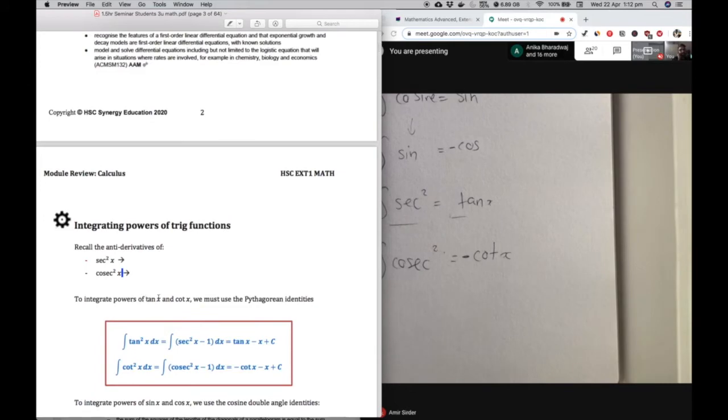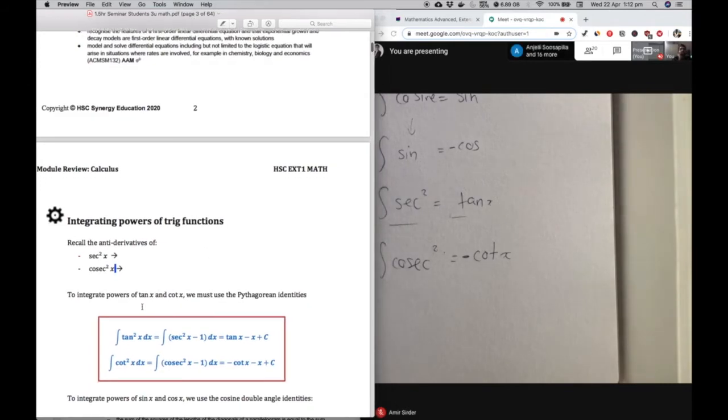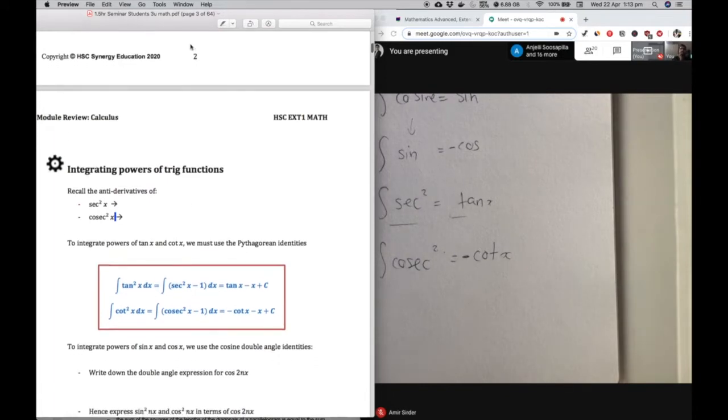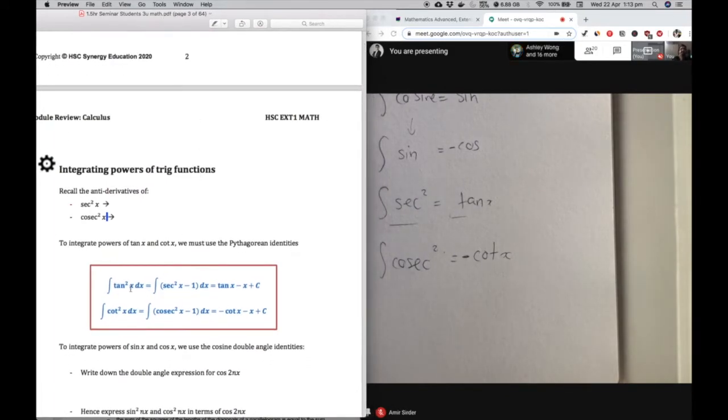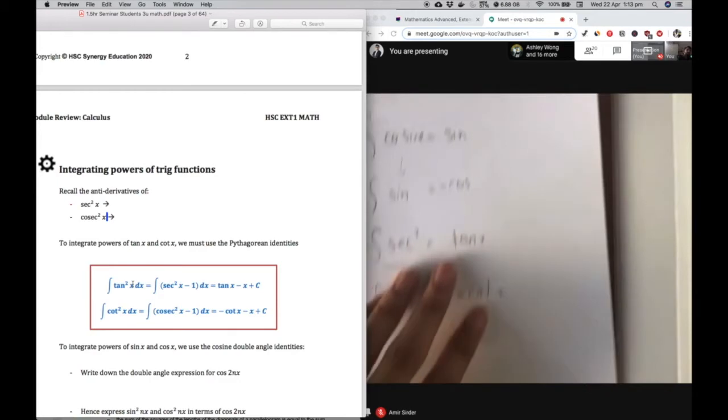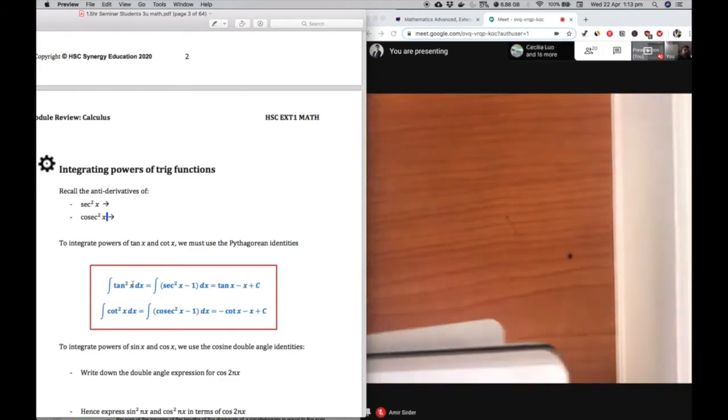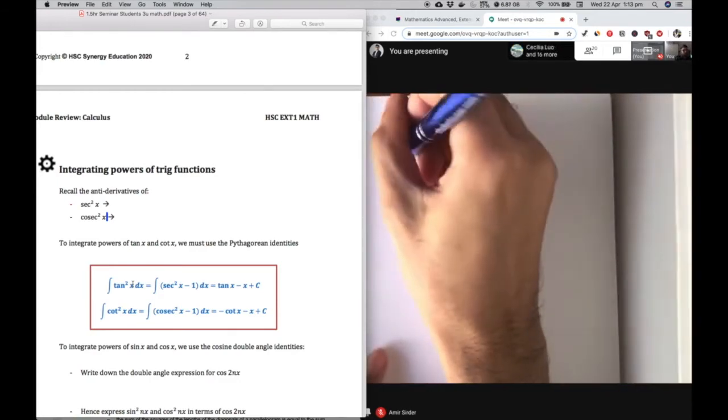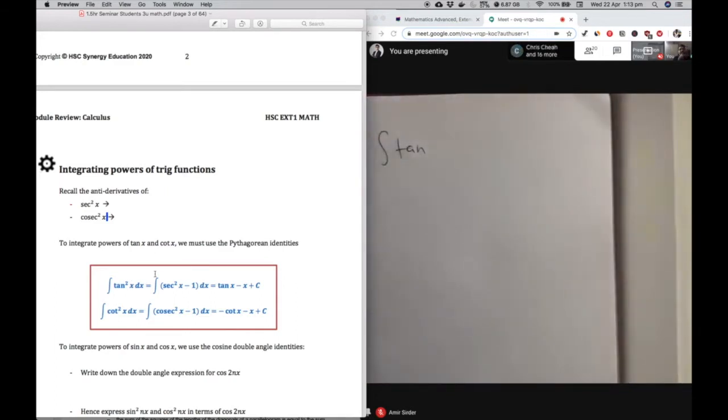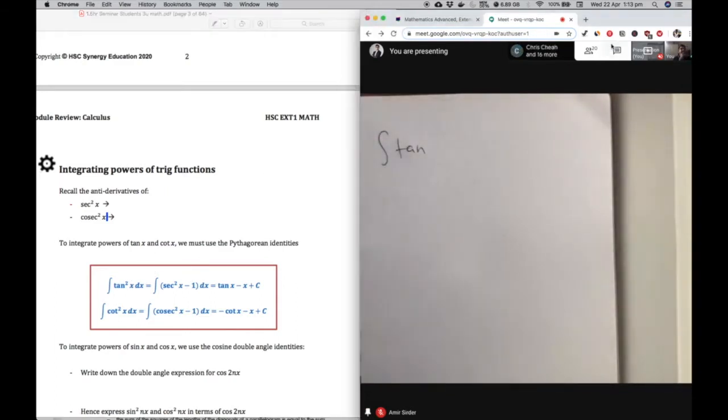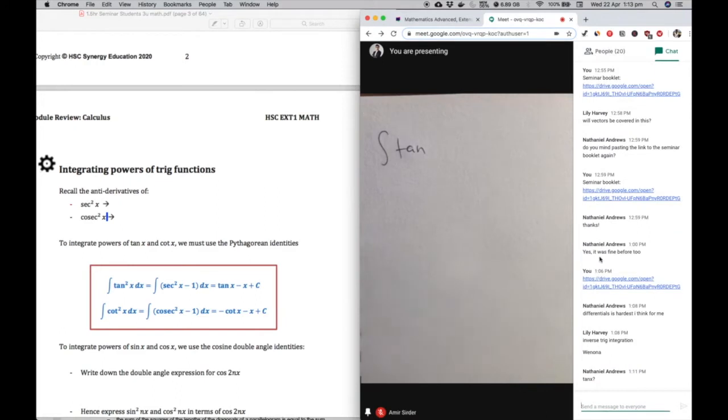So just be aware if you're integrating or differentiating, you can complement both things and put a minus sign. Yes, the antiderivative of cosec squared is also minus cot. Then there's the integrals of tan and cot. So the integrals of powers of tan and cot. Does anybody remember the integral of just tan? Before we get into tan squared, just a quick recap.